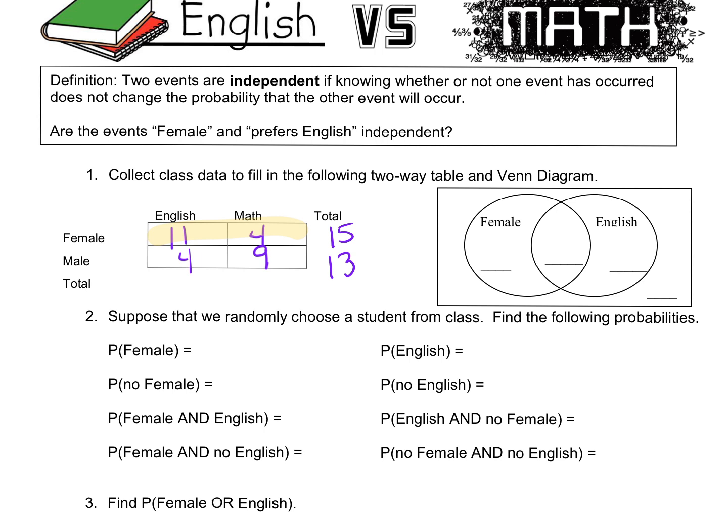11 plus 4 is also 15. And that's also 13. That's interesting — very interesting. Interesting data.